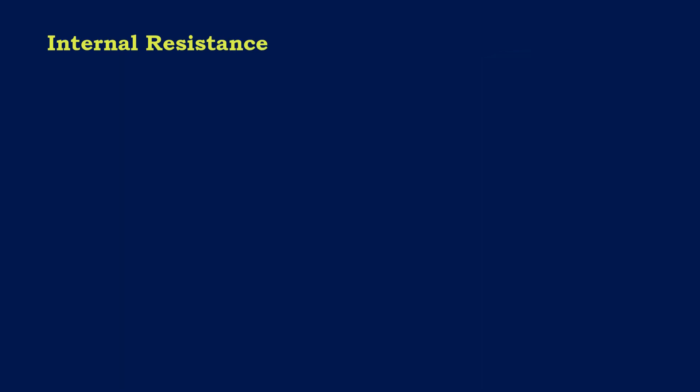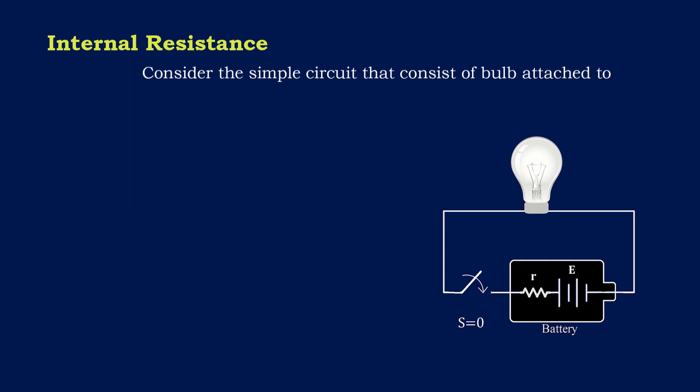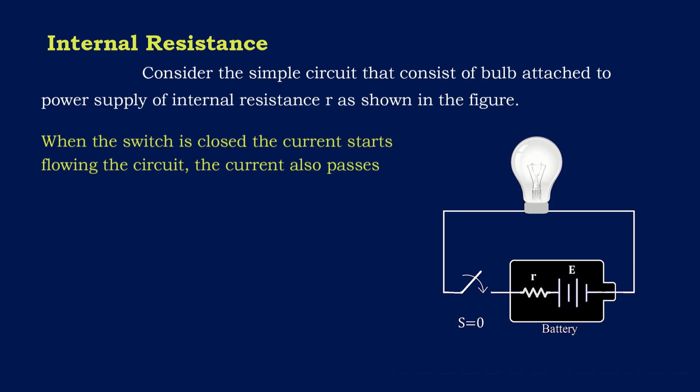To understand this, consider a simple circuit that consists of a bulb attached to a power supply of internal resistance R as shown in the figure. When the switch is closed, current starts flowing through the circuit. The current also passes through the internal resistance.